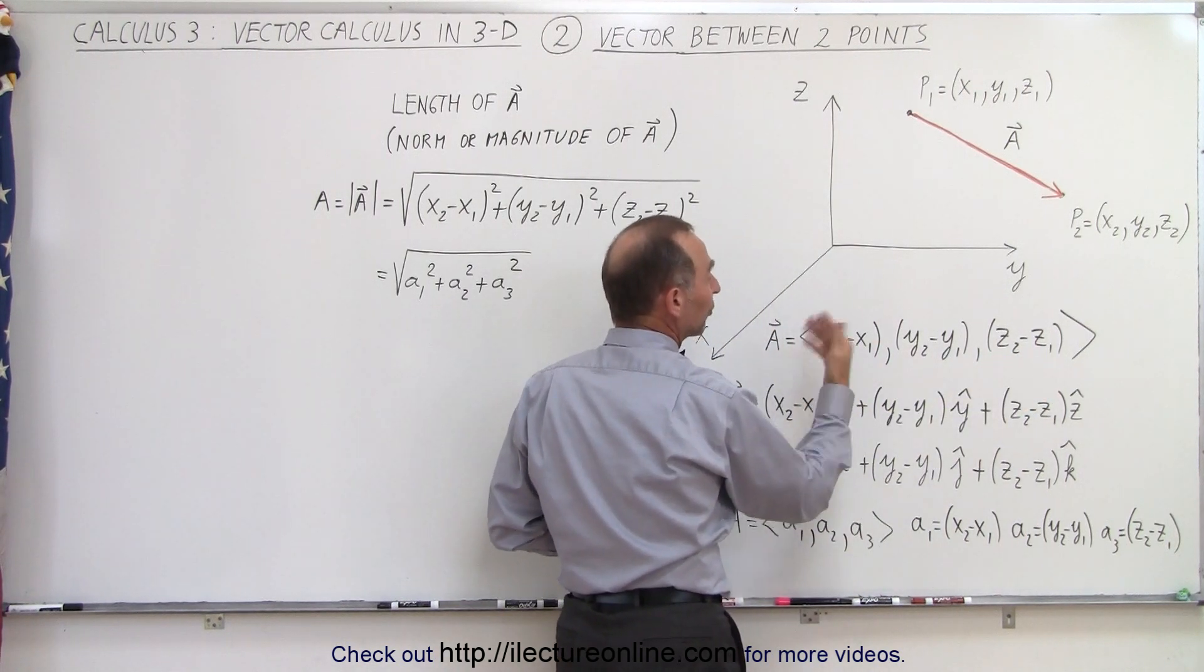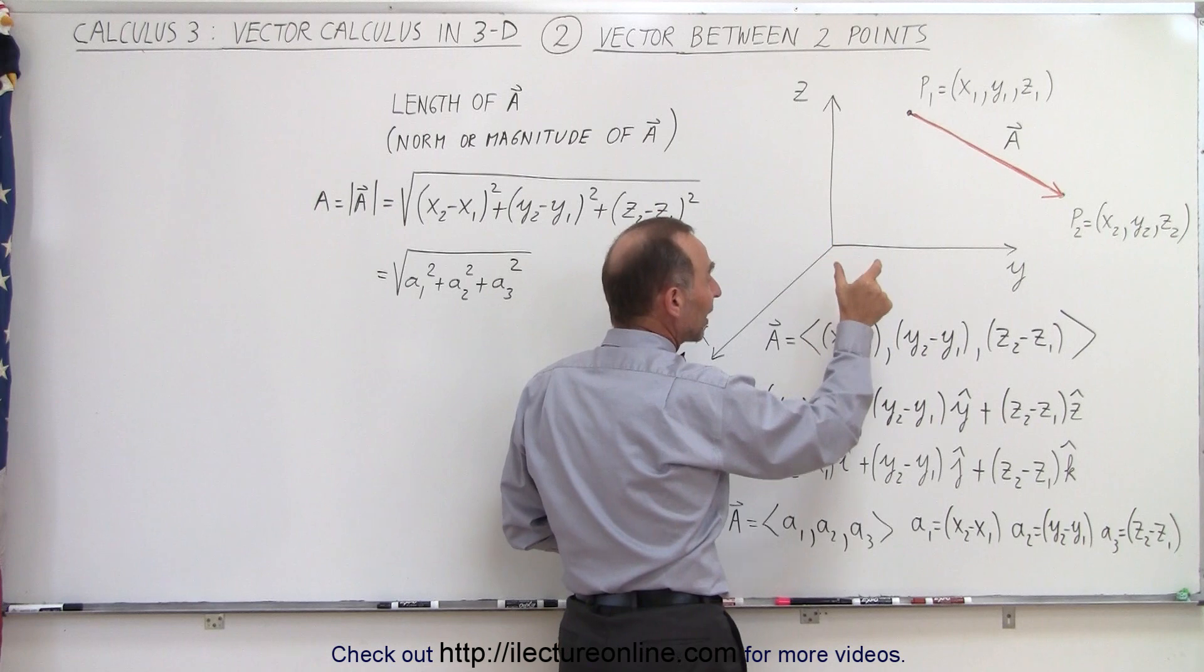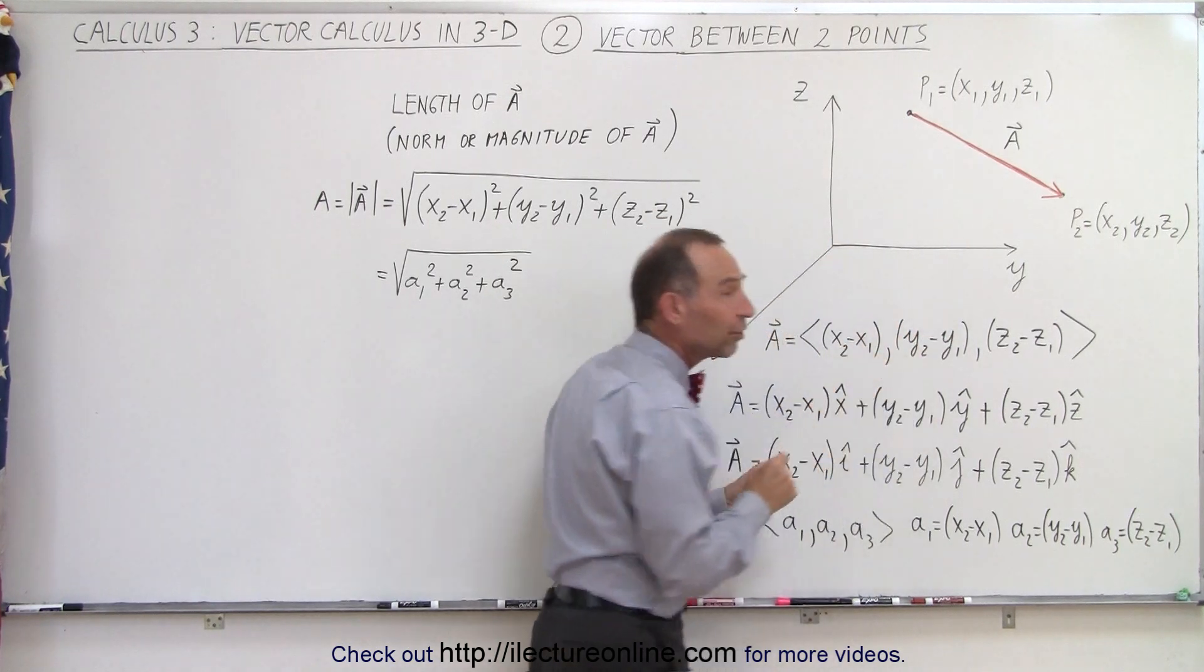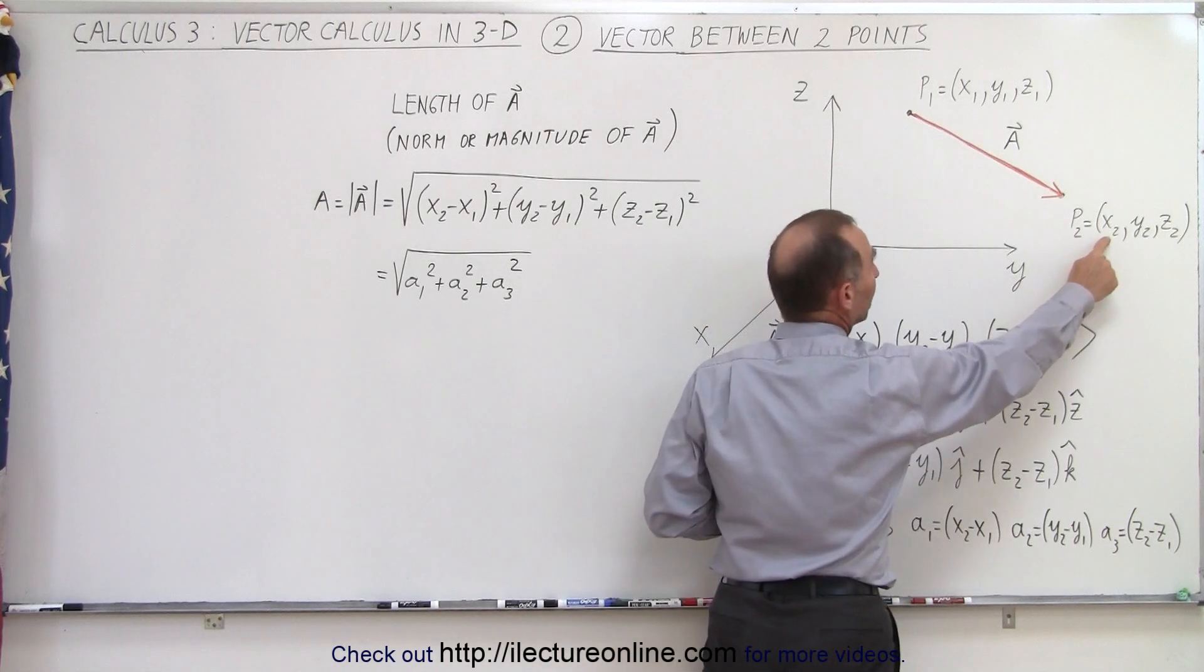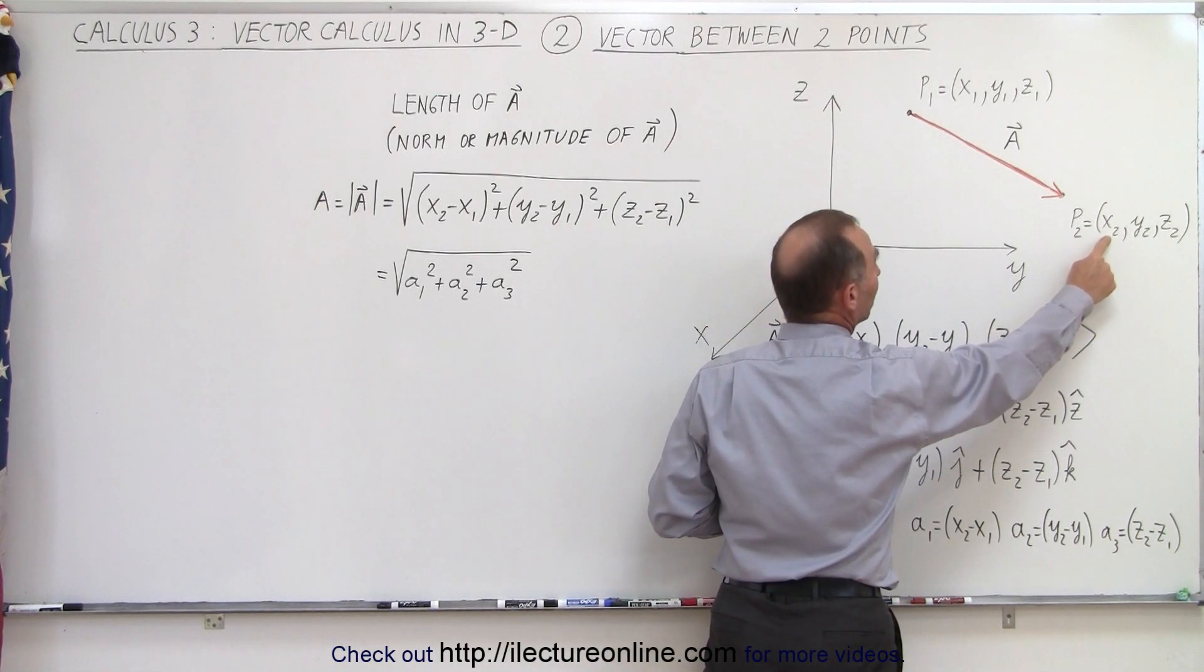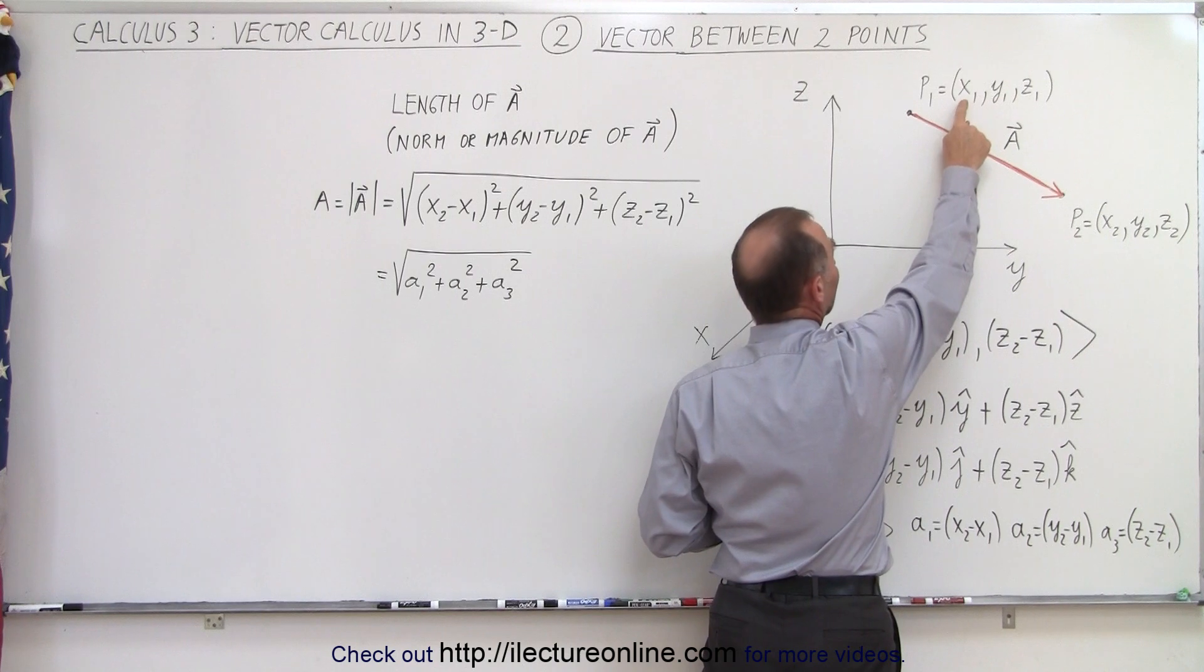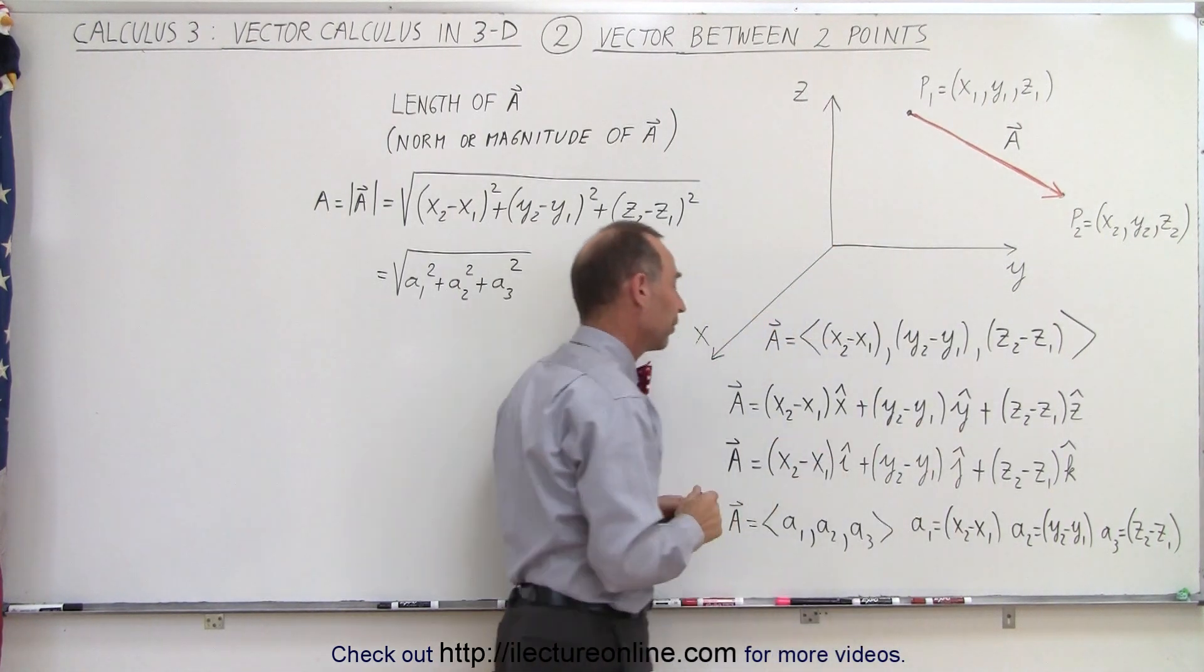And the magnitude is defined as the difference between x values, the y values, and the z values of the two points. You simply take the x component right here, the x value for the x component, and subtract from that the x value of the x component over here, and so forth.